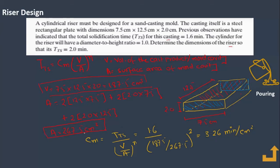Now we have the mold constant. We need to determine the dimensions of the riser such that its solidification time is 2 minutes. We use the same mold constant because we are dealing with the same mold. So Cm = 3.26, the time to solidification is 2 minutes, and we need to find the volume and area of the riser.